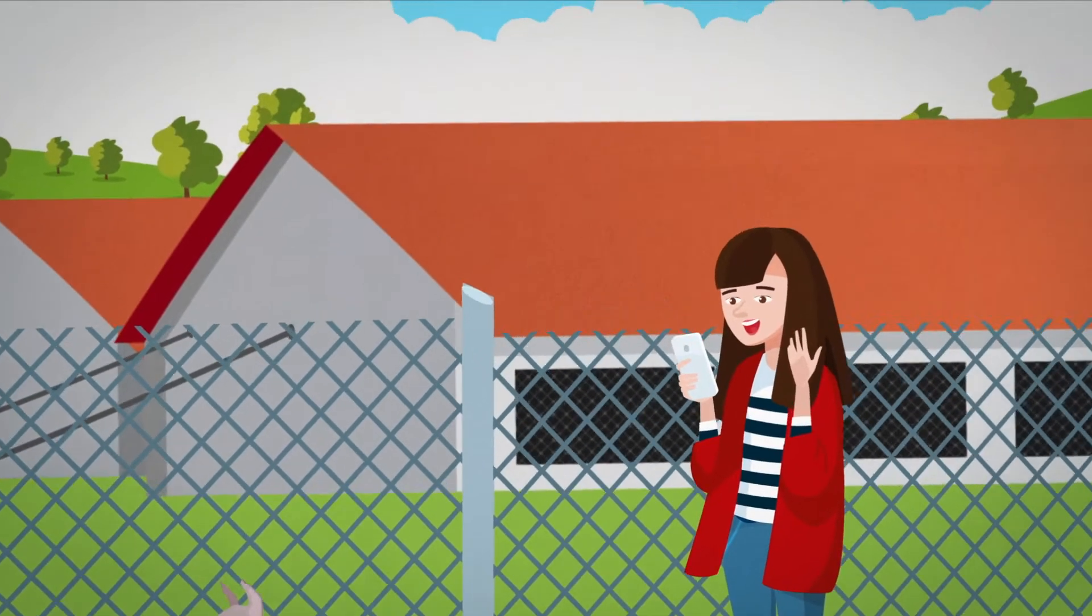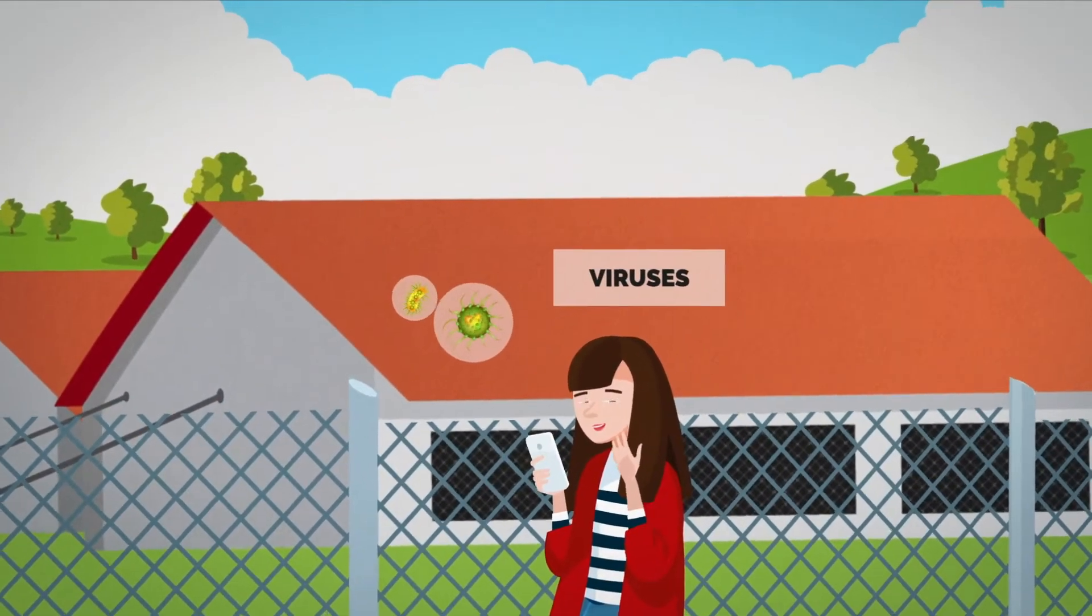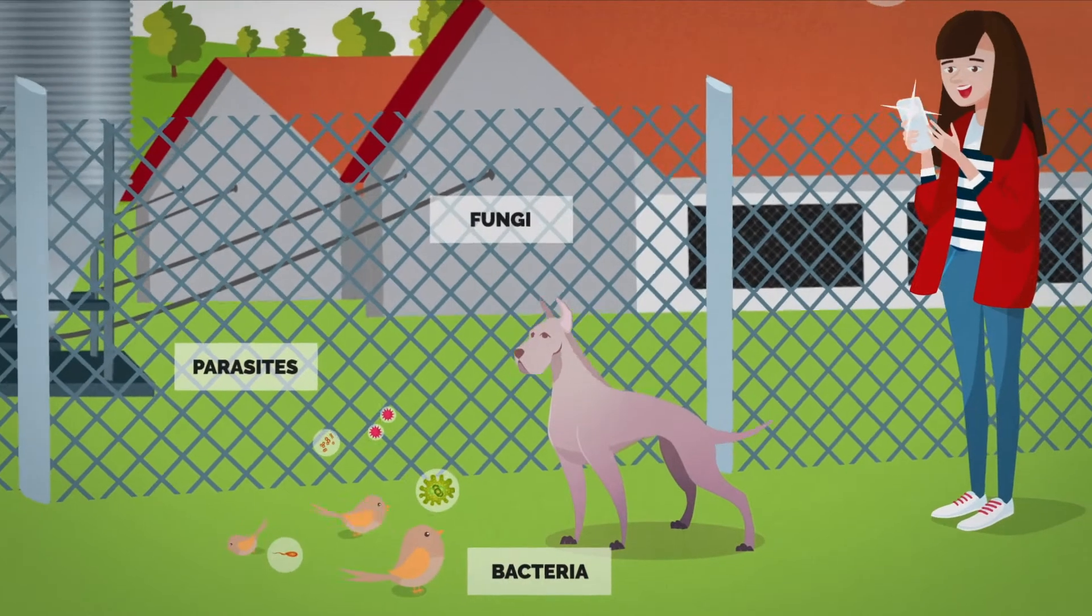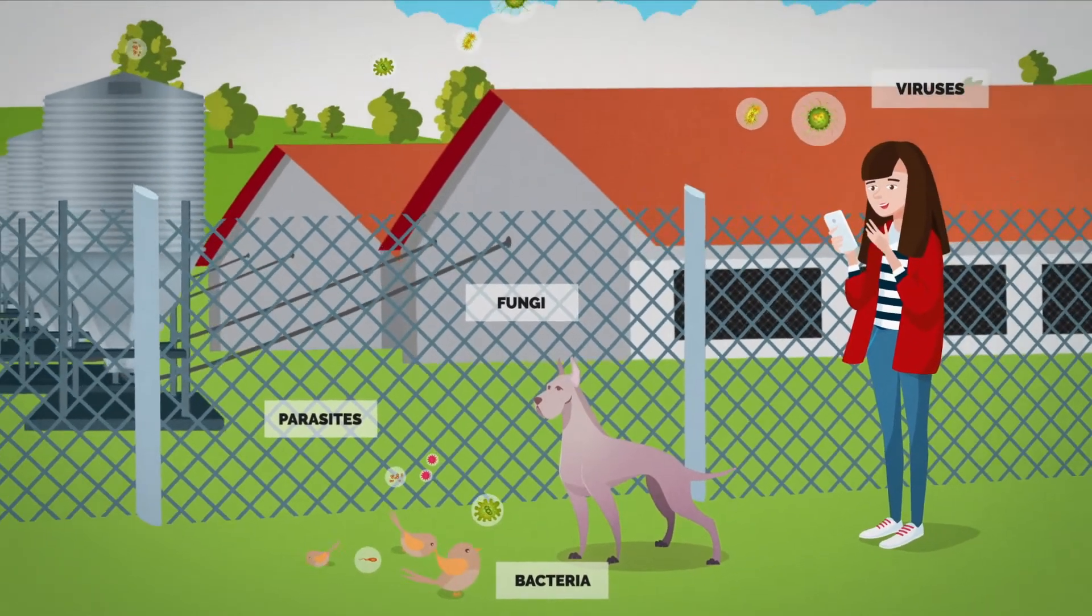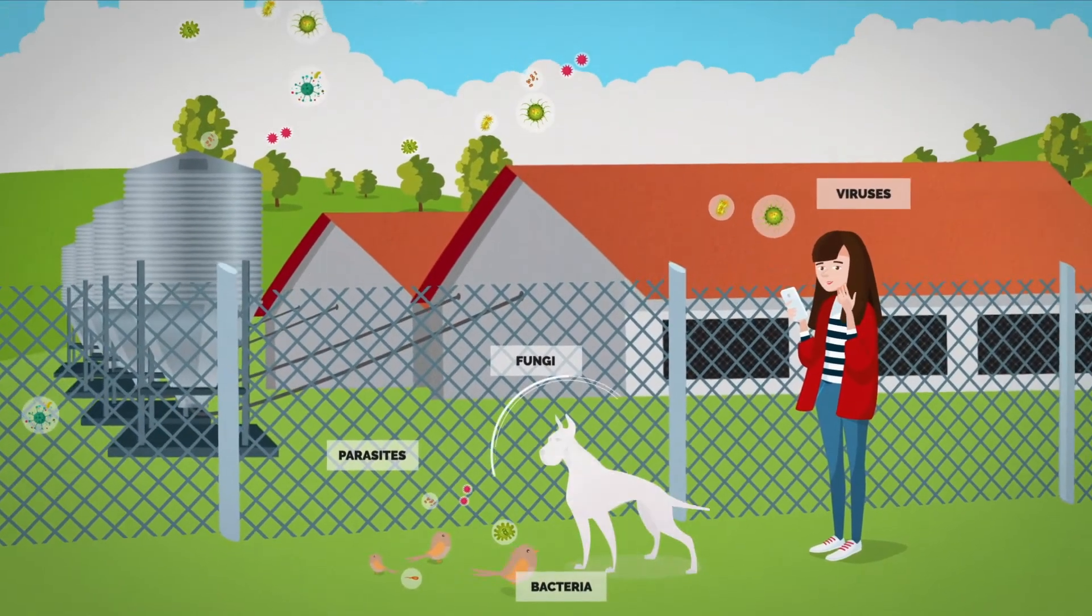The pathogens that can affect pigs are viruses, bacteria, parasites, and fungi. These agents can be present in objects, equipment, animals, and people.